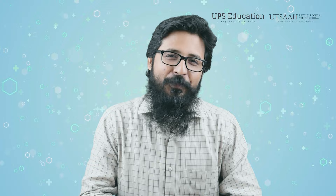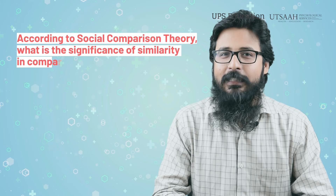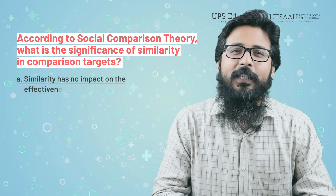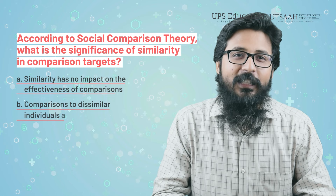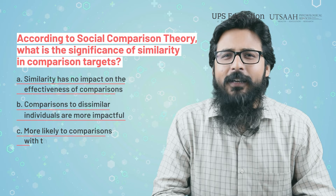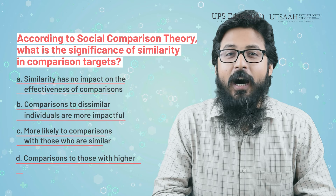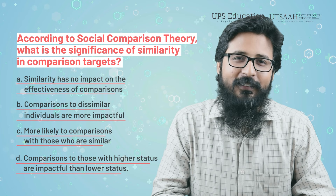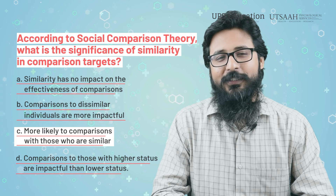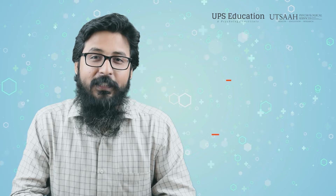Now for the second question: 'According to social comparison theory, what is the significance of similarity in comparison targets?' The correct answer is option C — individuals are more likely to make comparisons with those who are similar. Hope you understand the idea of social comparison theory. If you have any difficulty with any concept or have any questions, let me know in the comment box.